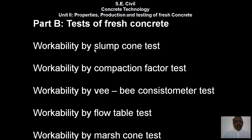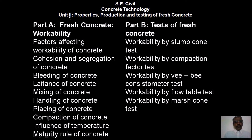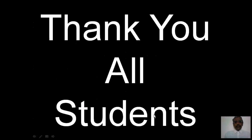We have covered Unit 2: Properties, Production and Testing of Fresh Concrete. Part A covered fresh concrete workability, factors affecting workability, cohesion and segregation, bleeding, laitance, mixing, handling, placing, compaction, influence of temperature, and maturity rule. Part B covered workability tests: slump cone test, compaction factor test, VB consistometer test, flow table test, and marsh cone test. Thank you all.